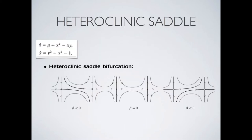Here is another way equilibria can interact: two saddle nodes interacting. For beta less than zero, the unstable manifold of the saddle exits from the equilibrium but does not yet reach the other equilibrium. As you control beta, the stable manifold of the right equilibrium meets the unstable manifold of the left saddle node equilibrium, forming an orbit that connects the two. This is called a heteroclinic orbit — going from one equilibrium to another.